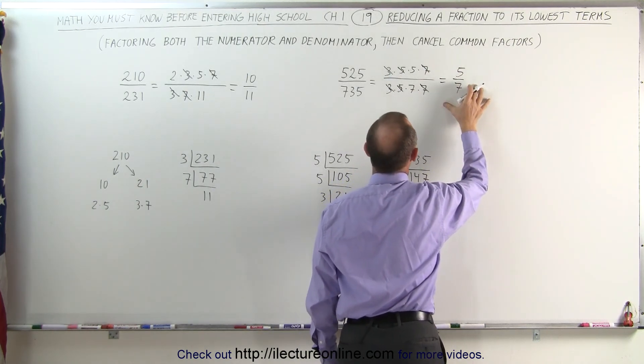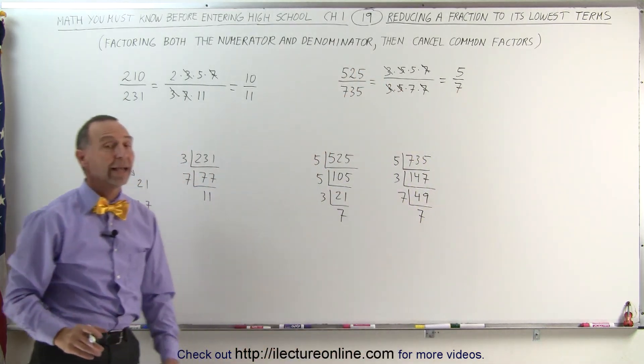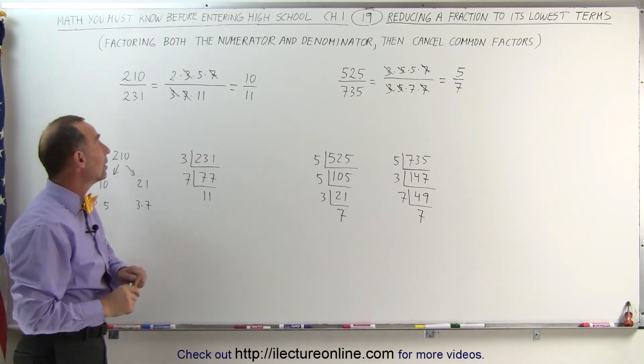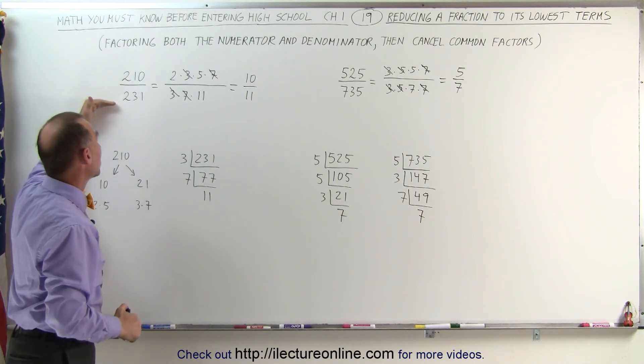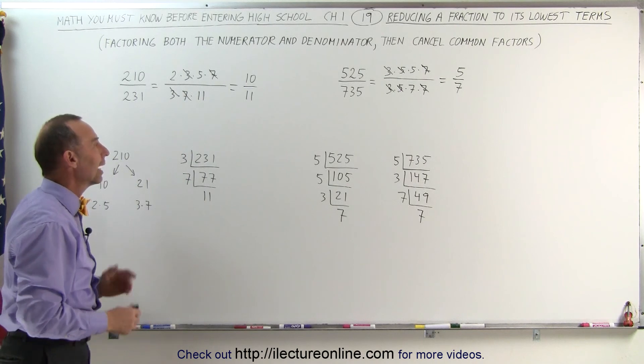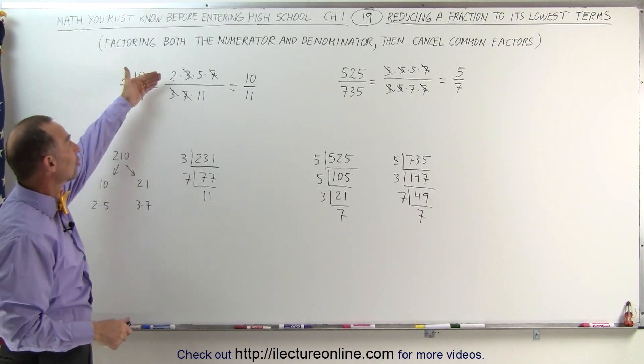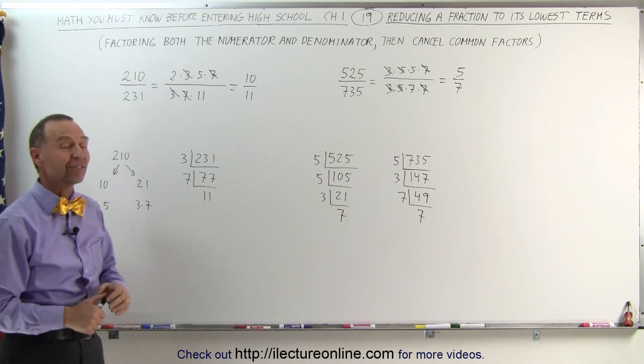This is the reduced form, the lowest form of this original fraction. And that's how we do that. Again, we factor the numerator and the denominator separately, either by whatever method is most appealing to you, and then you reduce by simply canceling out the common factors in the numerator and the denominator. And that's how it's done.